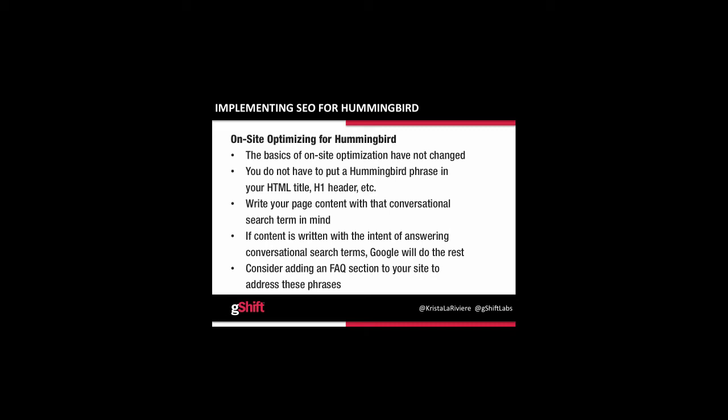Looking at on-site optimization for Hummingbird: the basics of how you optimize for focus keywords has essentially not changed. You're not specifically going to use a Hummingbird keyword phrase in your HTML title. However, you want to ensure that you write the page content with that phrase in mind. The page can be optimized with base keywords placed in the SEO fundamental locations, but you want the body of the page to answer the greater need-based question your prospect might have. If you've written the content to answer those conversational search terms and provide real value to the searcher, Google should be able to determine that and rank you accordingly. One key recommendation is adding an FAQ section to your site, which is a great way to directly address Hummingbird-friendly phrases. Where possible, add content pages that expand on the answers to your FAQs.